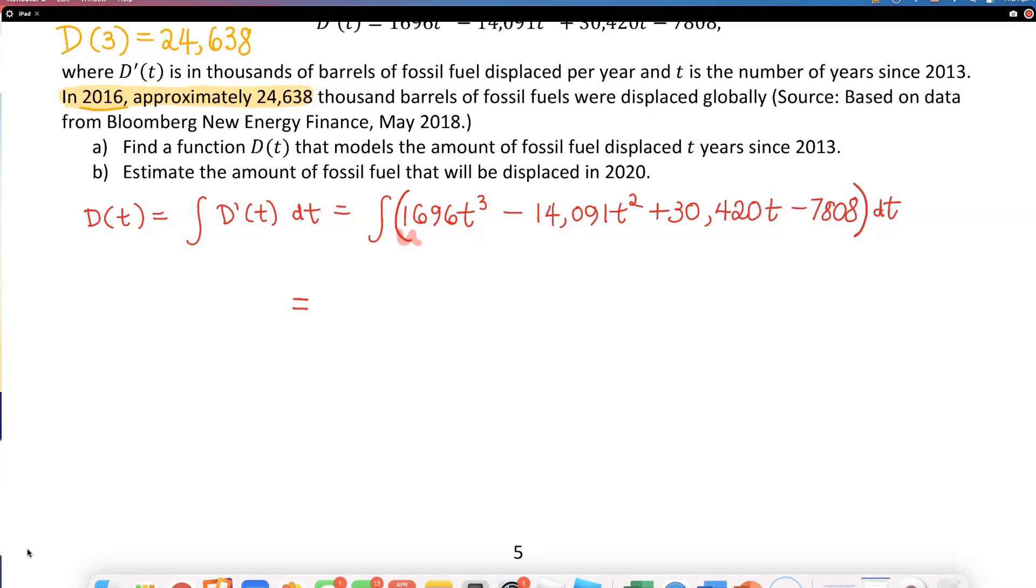Let's start one at a time. If you look at the first term, 1696t³, that's going to turn into, if you take the antiderivative, 1696t⁴ divided by 4. Let's keep going. Next term is going to be minus 14,091t³ divided by 3. You always go up one on the power and divide by the new exponent - that's the power rule.